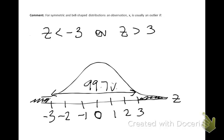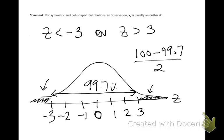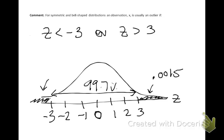The probability of an observation occurring on either one of these tails would be 100 minus 99.7. The probability for it occurring just on the lower tail or just on the upper tail would be that divided by 2, which shows there is a 0.0015 chance of it falling just on the upper tail or just on the lower tail. A probability this small would cause an observation bigger than 3 or less than negative 3 to be called an outlier.